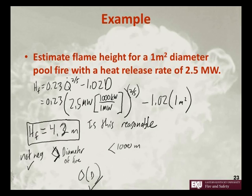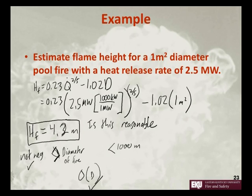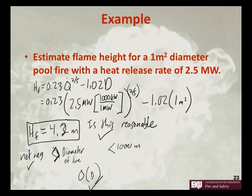We want it on the same order of magnitude — we don't want 100 meters or 1,000 meters. 10 meters, maybe. But generally, we'd want it less than an order of magnitude larger, because if it were 10 meters the Froude number would be really large and it would be more like a spray fire rather than a pool fire. So is this reasonable? Yes, I think it is.